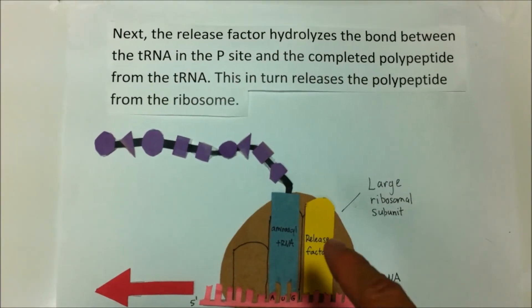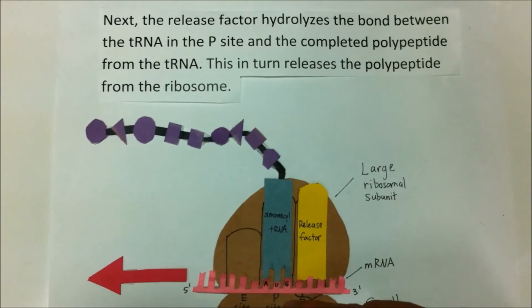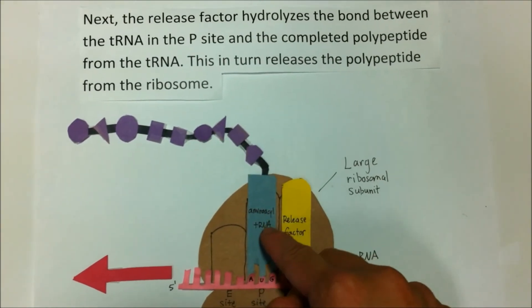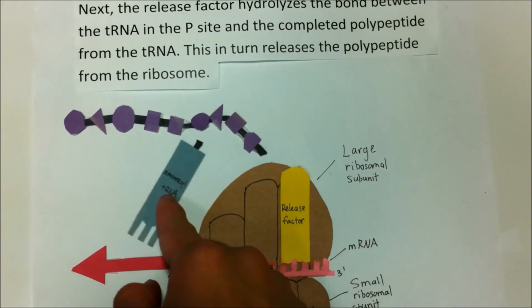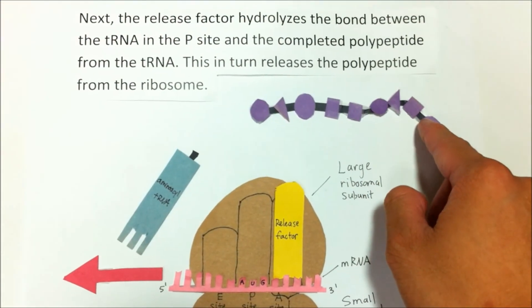Next, the release factor hydrolyzes the bond between the tRNA in the P site and the completed polypeptide from the tRNA. This, in turn, releases the polypeptide from the ribosome.